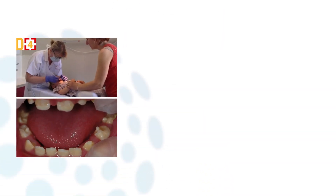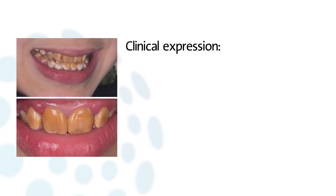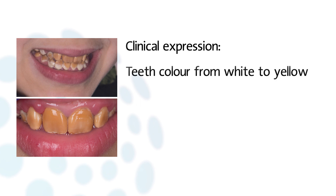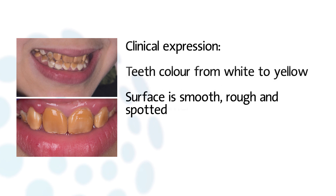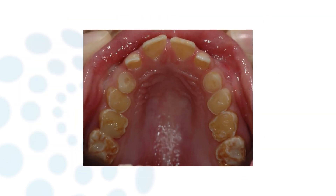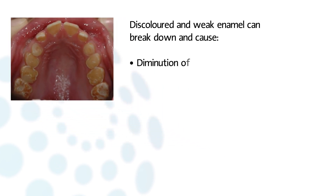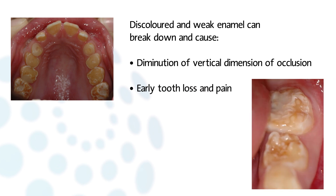Amelogenesis Imperfecta can be seen as soon as the teeth erupt. Clinical expression varies, affecting teeth color from white to yellow-brown, surface — smooth, rough, or spotted — and hardness, from normal to soft enamel. Discolored and weak enamel can quickly break down, causing a diminution of the vertical dimension of occlusion, early tooth loss, and pain, compromising aesthetic appearance and oral function. Thus, most patients need lifelong extensive restorative care.